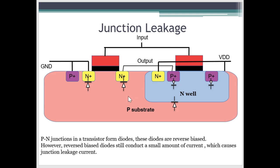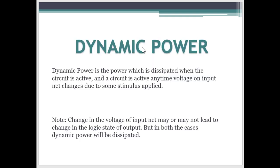Now this was about the static power or leakage power. Now let's move on to dynamic power. So dynamic power is dissipated when a circuit is active. A circuit is said to be active when the voltage on its input net is changing due to some stimulus applied.